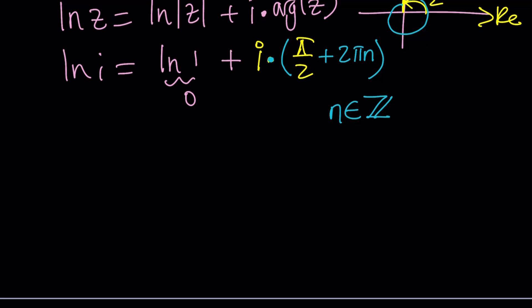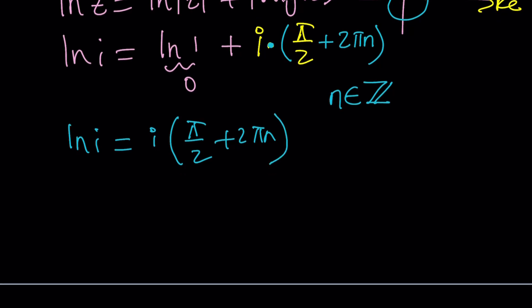So that's the general solution. Well, not really, it's just ln i, so don't get too excited. ln i is i times π over 2 plus 2πn. Now, if I replace n with 0, I get the principal value for the natural log of i.